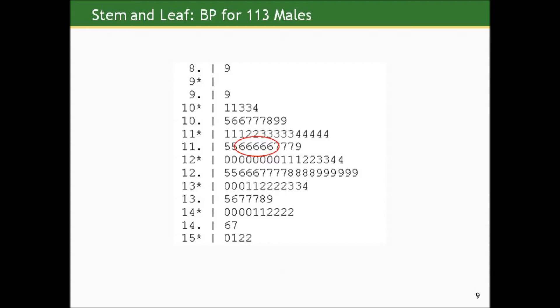What does the '8 dot', '9 star', '9 dot' mean? The '9 star', '9 dot', '10 star', '10 dot' notation means it's breaking up the 90s into two bins: 90 to 94 and 95 to 99, and the 100s into two bins: 100 to 104 and 105 to 109. You'll see different variants on this depending on how much data there is, but a repeated number in the stem just means it's breaking up that set of tens or hundreds into bins, similar to a histogram.